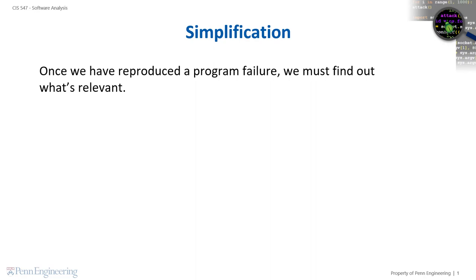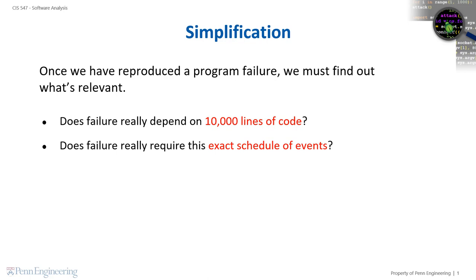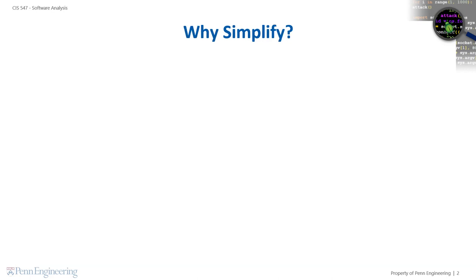A typical bug report contains a lot of information that the developer can use to reproduce the program failure. Once we have reproduced a program failure, we must find out what information is relevant. For instance, does the failure really depend on 10,000 lines of code? Does the failure really require this exact schedule of events? Does the failure really need this sequence of function calls?